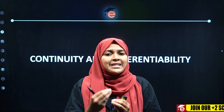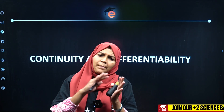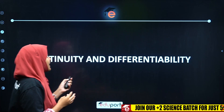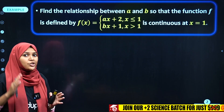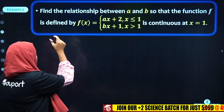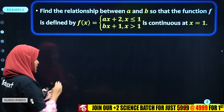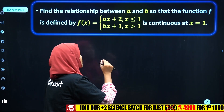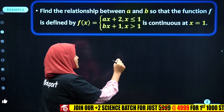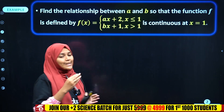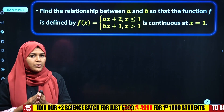We are going to expect a little bit of a problem. If you are going to have a question in this pattern, we will have to discuss the functions and values. The first question is continuity: find the relationship between a and b so that the function f is defined by f(x) = ax + 2 if x ≤ 1, and bx + 1 if x > 1, is continuous at x = 1.